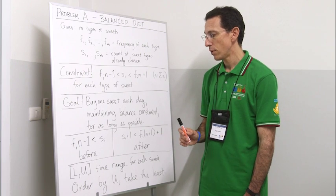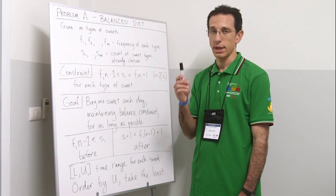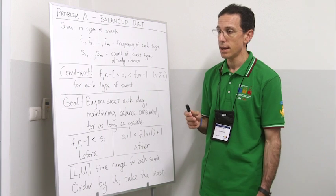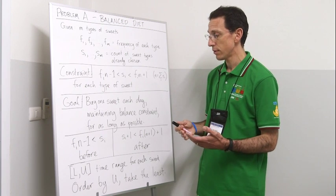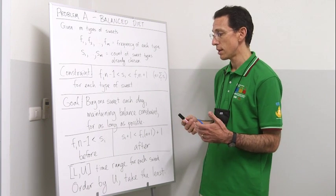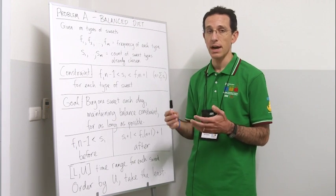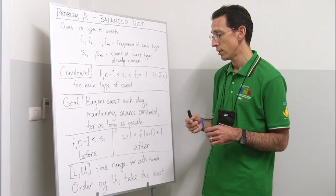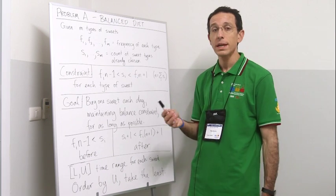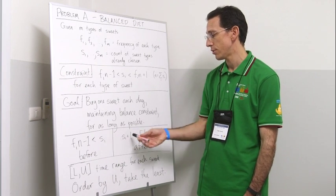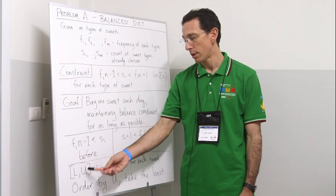If we take these two, we can think about these as predicting times at which Danny may eat a sweet. In other words, we can turn these into lower and upper bounds on the times at which he may eat this particular sweet. For each sweet, we can turn these two constraints into lower and upper bounds, a range of times.